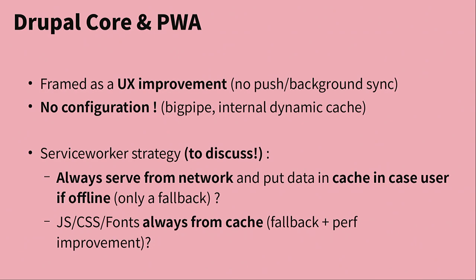Gabe suggests splitting the difference on the 'always serve from network vs. always from cache' debate by implementing a timeout policy in the service worker — if the network doesn't respond within one or two seconds, fall back to cache. That could work. We'd need to put that in an issue and get people discussing it. There's research on drop-off times and expected page download times, though those measurements tend to be region-specific, making it hard to set a single limit in core.